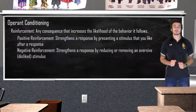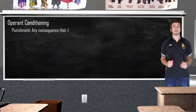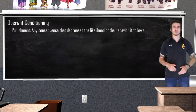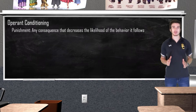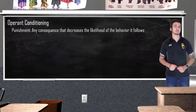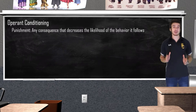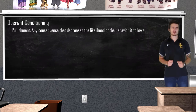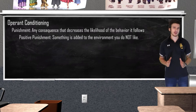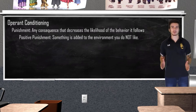On the opposite end of reinforcement, we have punishment. While reinforcement is meant to strengthen a behavior, punishment is going to try and stop a behavior from reoccurring. Just like reinforcement, punishment can be either positive or negative. Positive punishment is punishment by application — something is added to the environment that the organism does not like in order to stop a behavior from reoccurring.